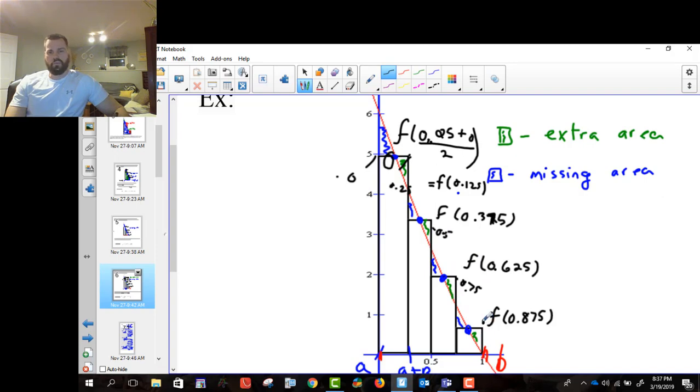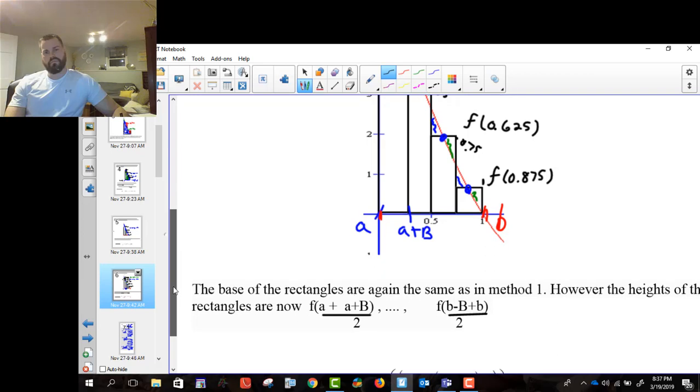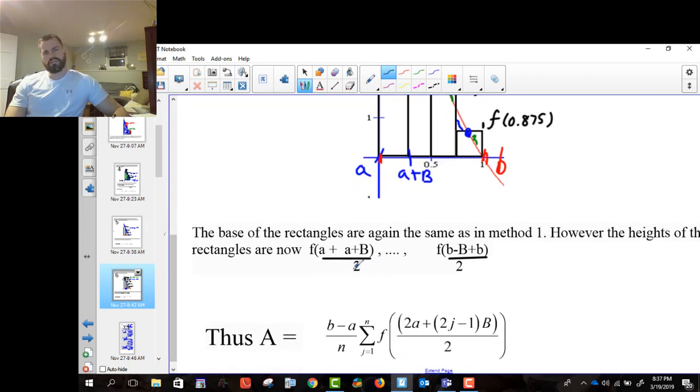And finally, we're using the middle between f of 1 and f of 0.75, which is 0.875. So it starts at the middle of the first, the left endpoint, and the second rectangle. So a plus the base is the midpoint of that. And it ends at the left endpoint minus, or the right endpoint, sorry, minus the base plus the right endpoint divided by 2.